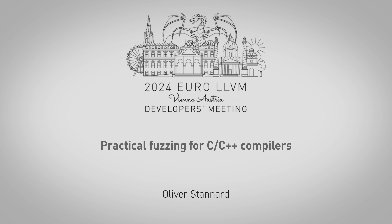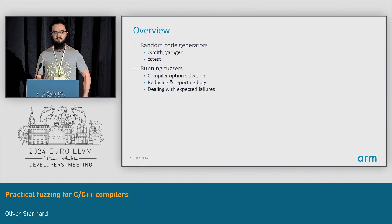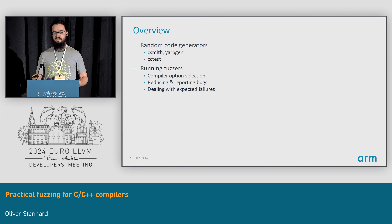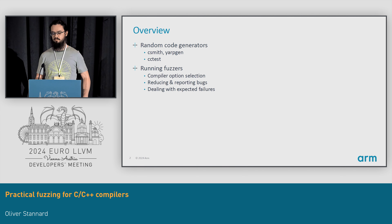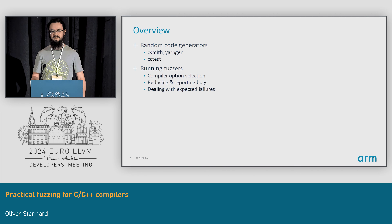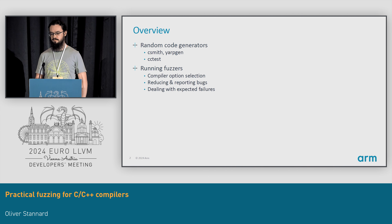Hello, so I'm going to talk about two broad subjects today. The first is a few of the random code generators that I've been using for testing both Clang and GCC, and then I'll talk about the way that I run these, the way that I use these to report bugs, and how I deal with bugs before they've been fixed.